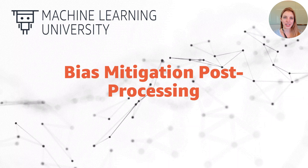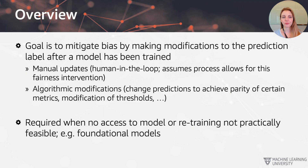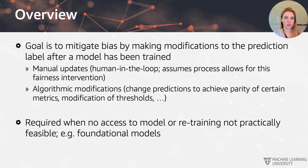Now let's talk about bias mitigation during the post-processing stage, meaning at this point we already have model predictions and we want to modify those predictions — we actually want to change some of the results. The goal is to mitigate bias by making modifications to the predicted labels or scores after the model has been trained.